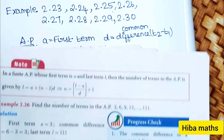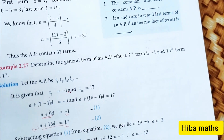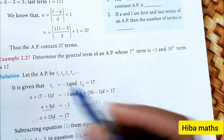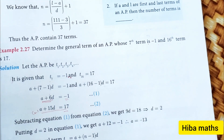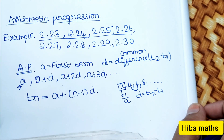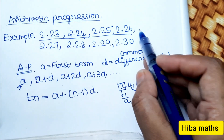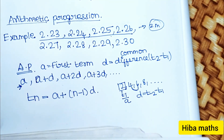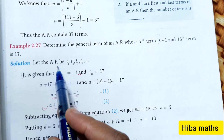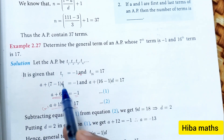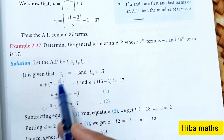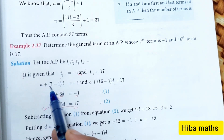Example 2.27: Determine the general form of an AP whose 7th term and 16th term are given. This is a 5-mark question. We write out the AP series T1, T2, T3... T7... T16. We substitute into the formula: T(n) = a plus (n minus 1) into d, using n equals 7 and n equals 16 to find 'a' and 'd'.